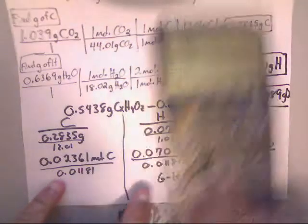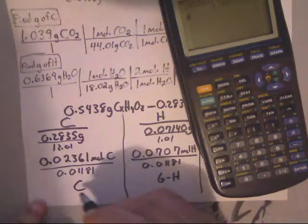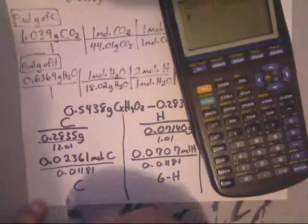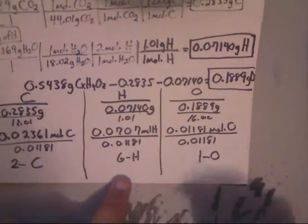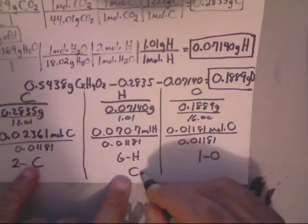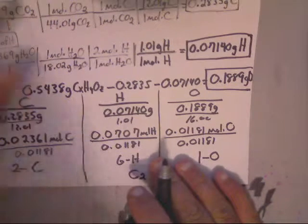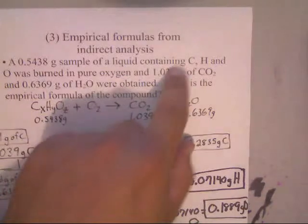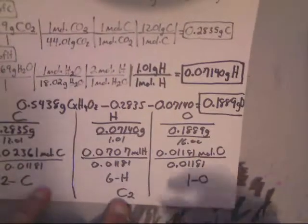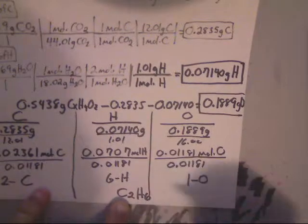So my final formula then would be C2. Since they mentioned it carbon, hydrogen, oxygen, I'm going to write it C2H6O. That's my formula. That is my empirical formula. Look at that.